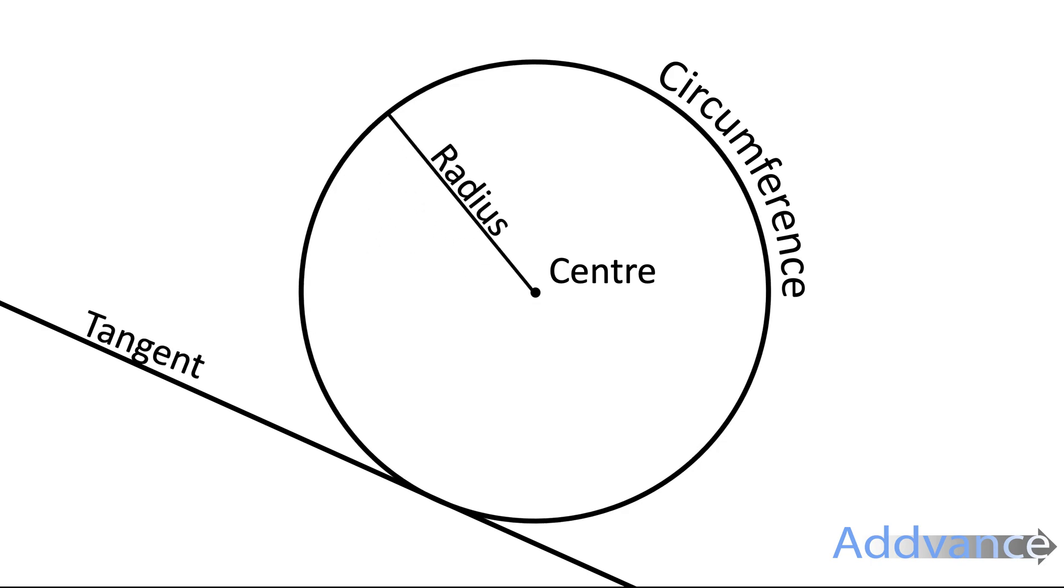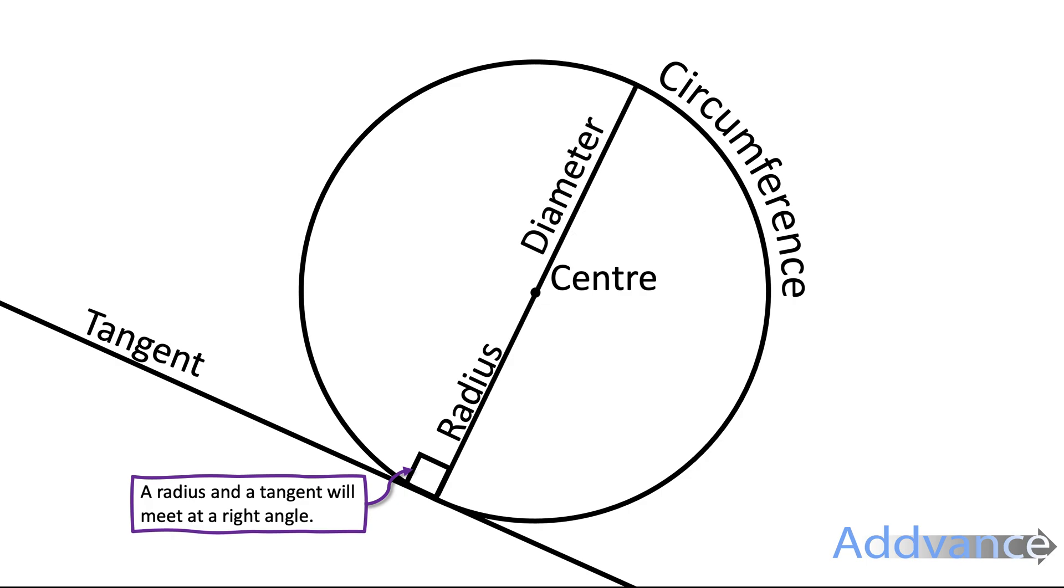We have the center of the circle and between the center and the circumference of the circle we have the radius. The radius is a line connecting the center and the outside of a circle. The radius and the tangent will always meet at right angles.